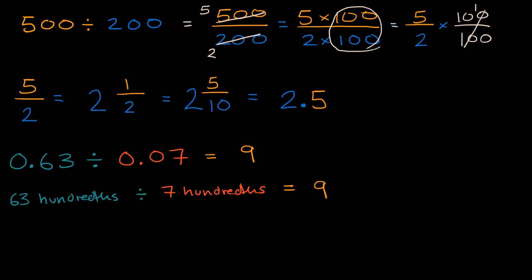Another way to think about it is we can express this as a fraction. So in the numerator, you have 0.63. And in the denominator, you have 0.07. And if the decimals are bothering us, we can multiply both the numerator and the denominator by the same value to get rid of the decimals.